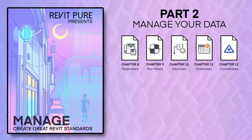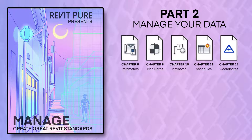Part 2 is called Manage Your Data. It is all about the I in BIM, which of course stands for information. You will learn everything you need to know about all types of parameters in Revit. You will create a strong note system, learn advanced strategies to create schedules, and finally master Revit's complicated coordinate system.